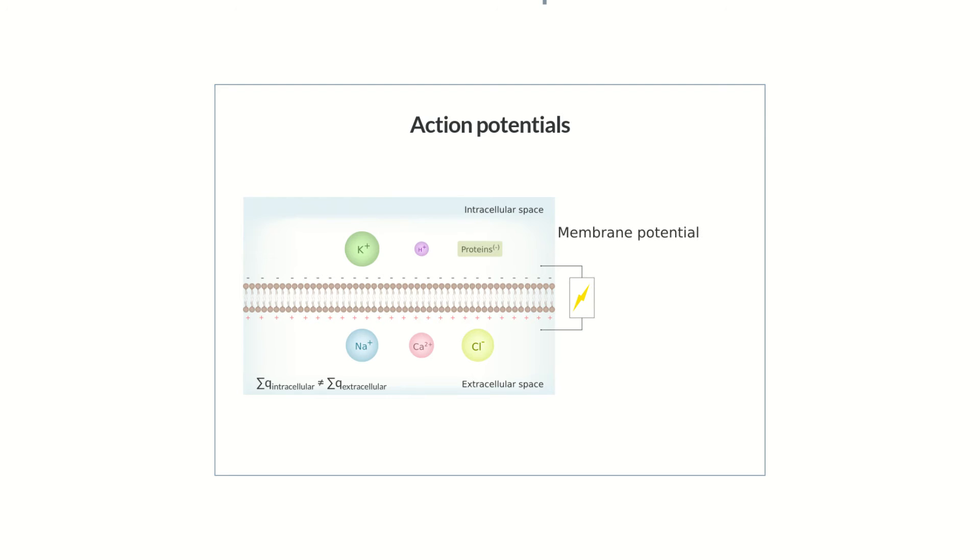The membrane potential of a cell in the default state is termed the resting potential. In this state, the intracellular net charge is more negative than the net charge outside the cell.